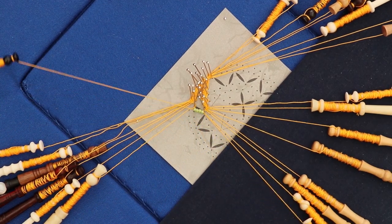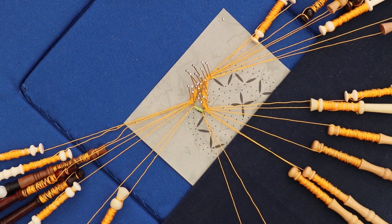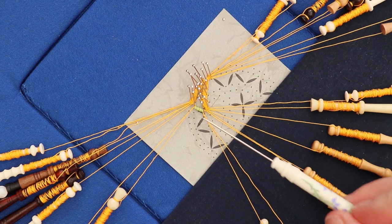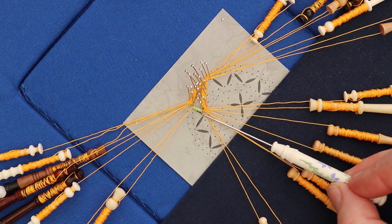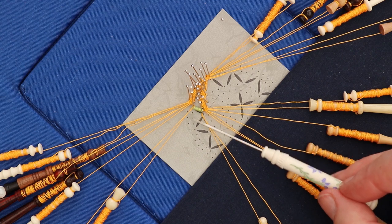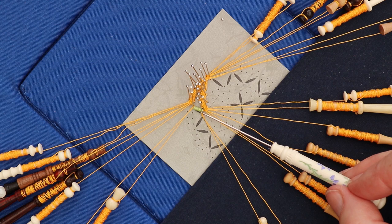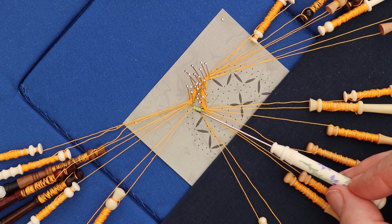And I then just pull them into position and I put one twist on both of those pairs. Now the next one is also going to be joining the same pin on the right hand side, so I need to work the trail to here.